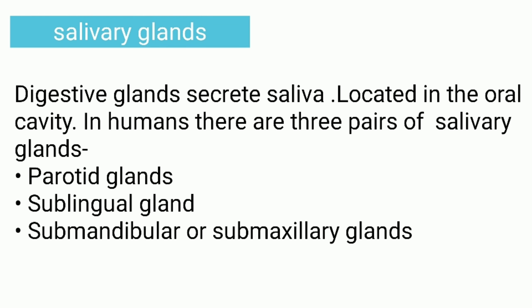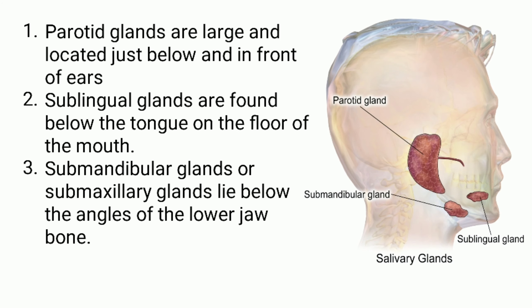The first digestive gland is salivary glands. The digestive glands that secrete saliva are known as salivary glands. These are located in the oral cavity. In humans, there are 3 pairs of salivary glands: parotid glands, sublingual glands, and submaxillary or submandibular glands. In this picture, we observe the different types of salivary glands in different regions of the oral cavity.